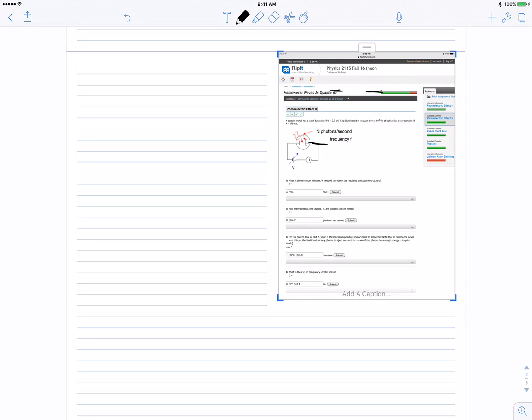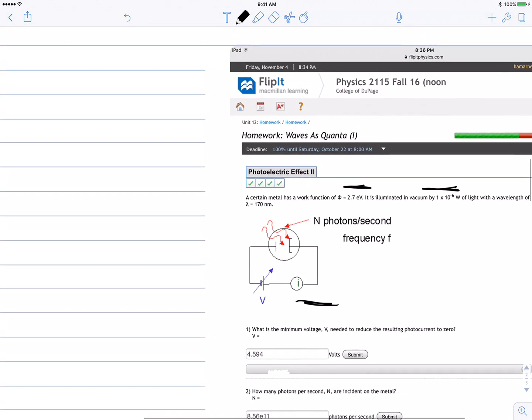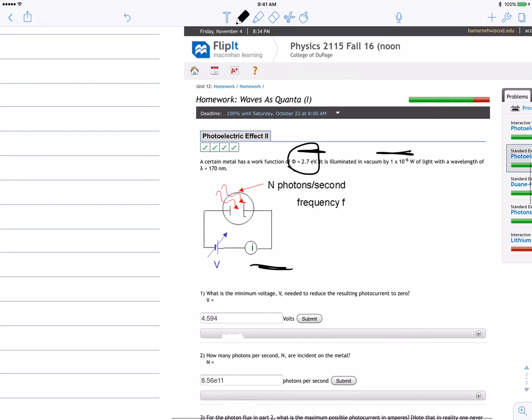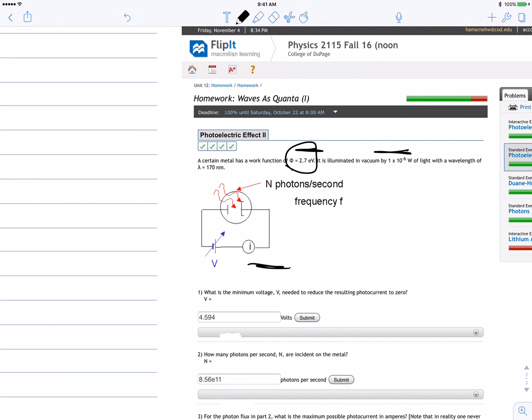What's up guys, this is the photoelectric effect problem 2, same concept. We got a work function of 2.7 electron volts, vacuum 1 times 10 to the negative 6 watts which is the same as joules per second, wavelength of 170 nanometers. The first question: what is the minimum voltage to reduce resulting photocurrent to zero?